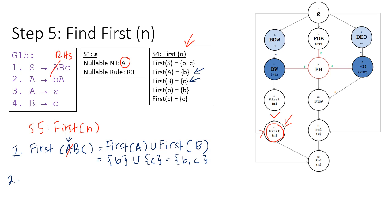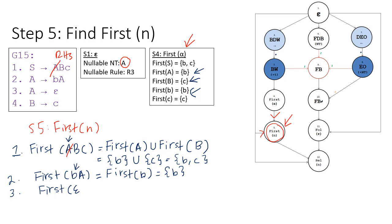Let's move to the second rule. For the second rule, we need to find FIRST(BA). FIRST(BA) means FIRST(B) because B is the leftmost symbol, so FIRST(B) taken from step four is B. For rule three, we need to find FIRST(ε), and FIRST(ε) is the empty set — a set with no elements. Finally, for rule four, we need to find FIRST(C), and FIRST(C) from step four is C.